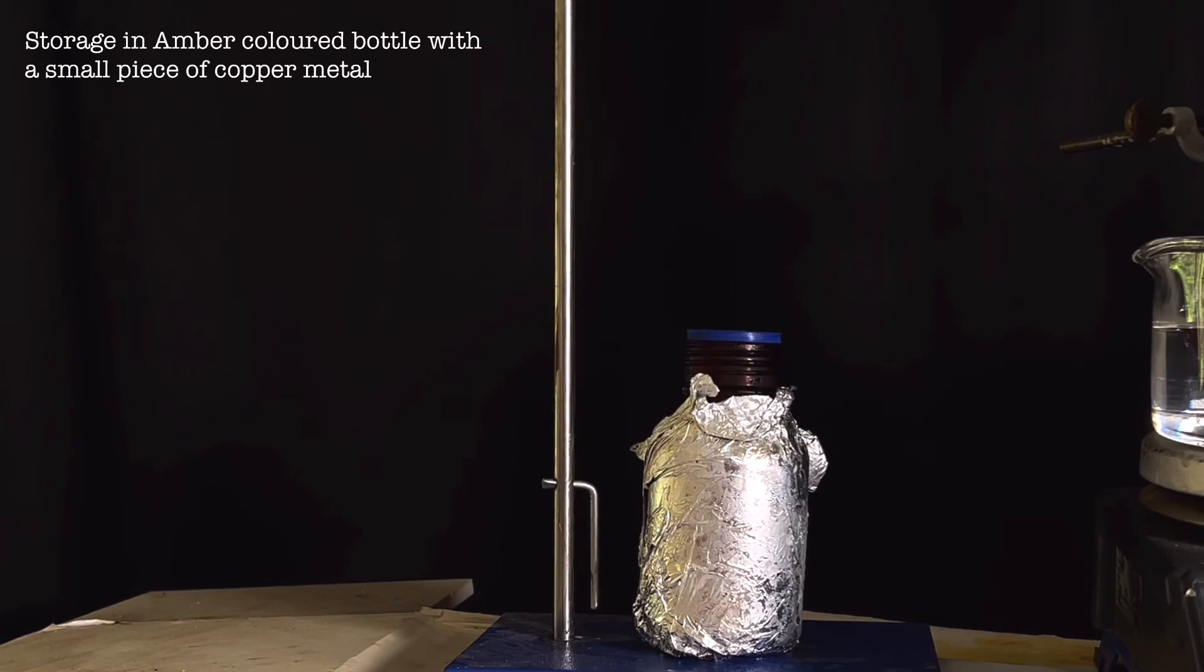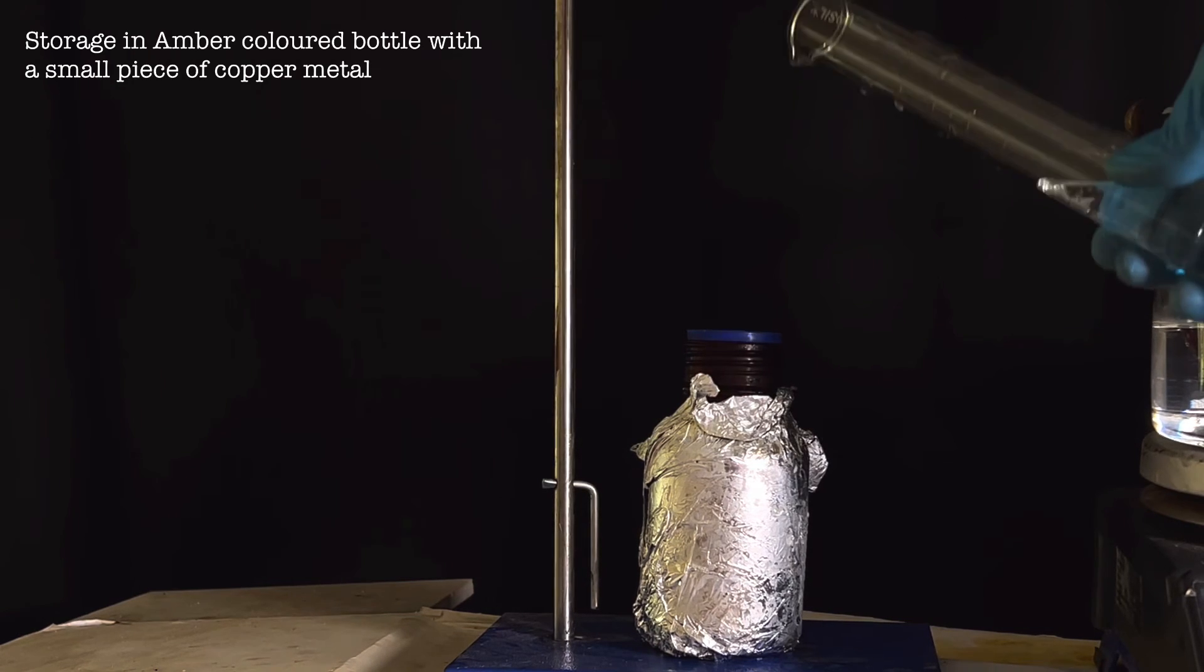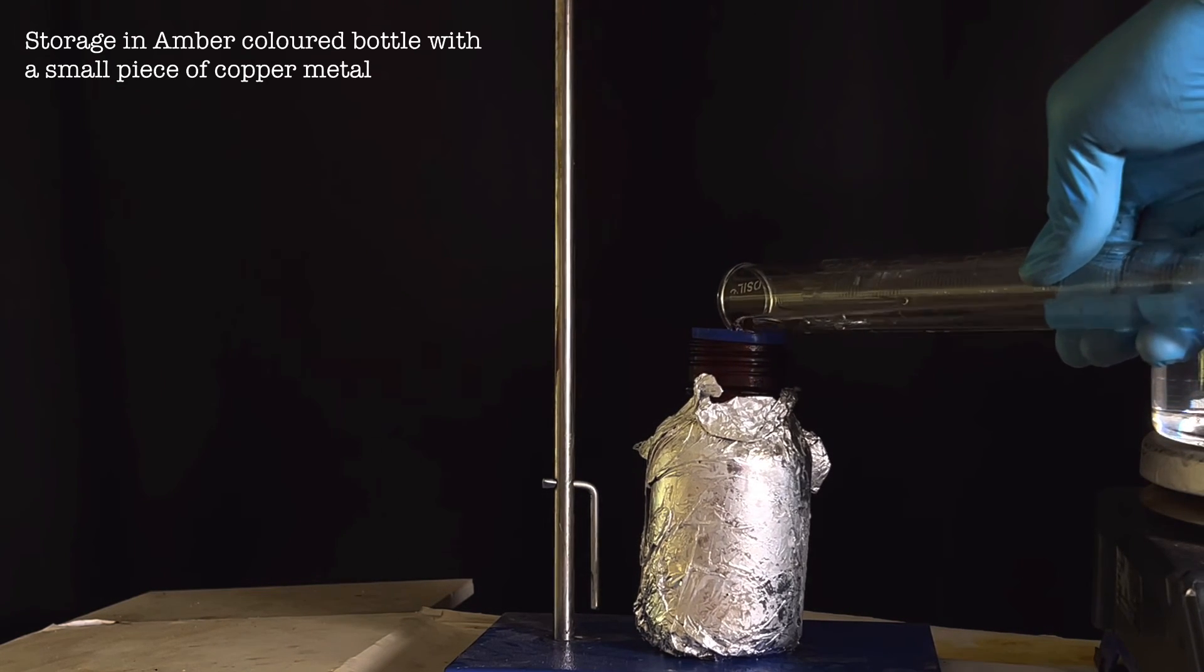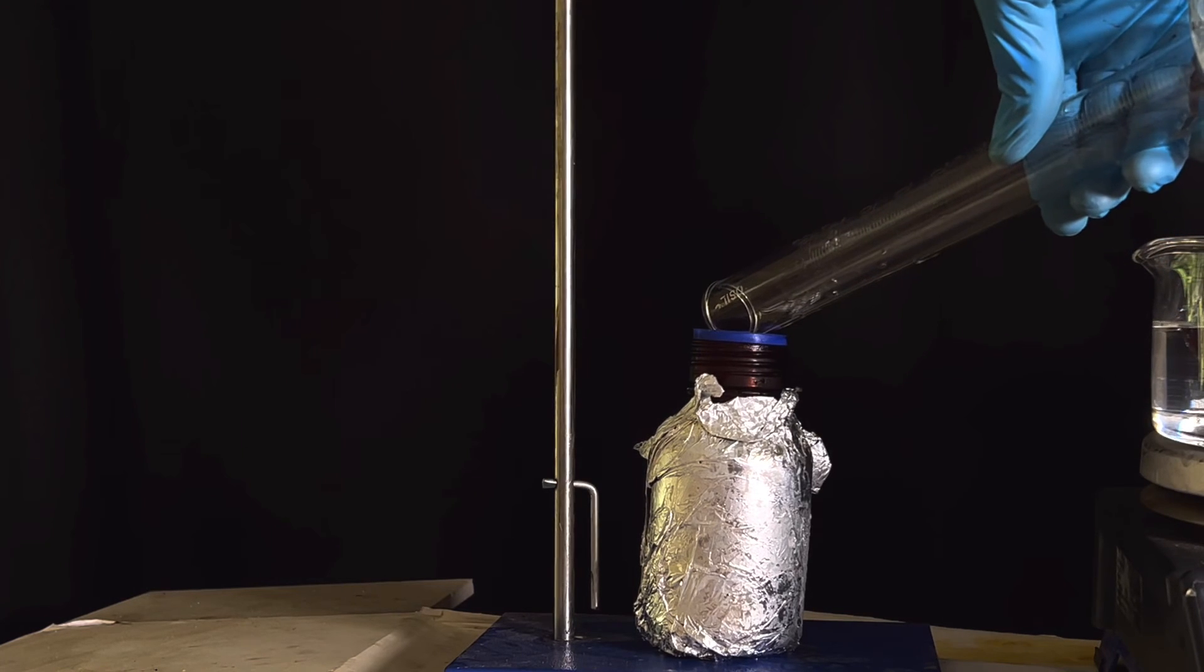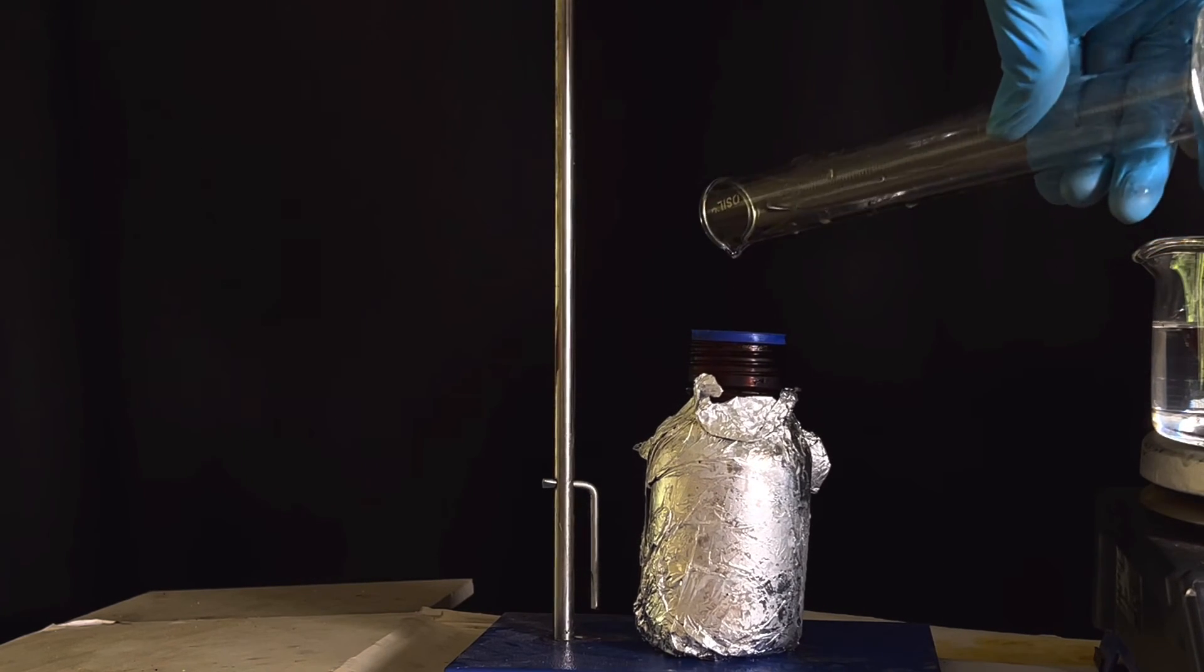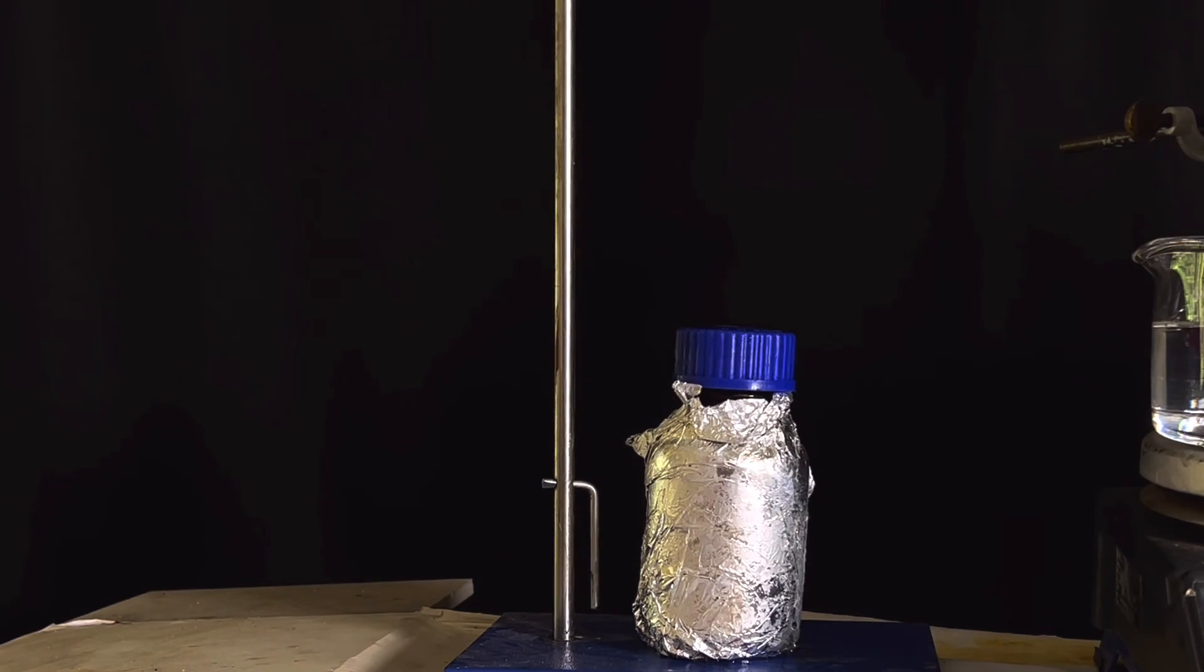It was then poured into an amber glass bottle for storage. The bottle contains a piece of copper metal to prevent decomposition and the bottle was covered with aluminum foil to provide extra protection from light.